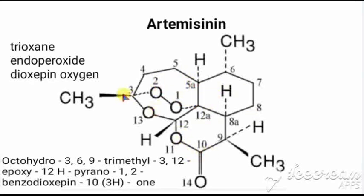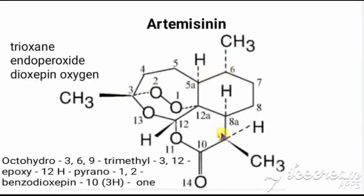We also need to note the substituents: three methyl groups at positions 3, 6, and 9, and a ketone at position 10. The epoxide is formed because the parent structure has hydrogens at positions 3 and 12, which are removed and those two carbons are connected by oxygen to satisfy valency. So the full chemical name is octahydro-3,6,9-trimethyl-3,12-epoxy-12H-pyrano[4,3-j]-1,2-benzodioxepin-10(3H)-one.